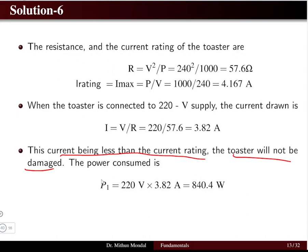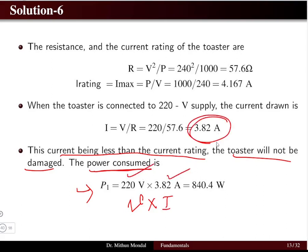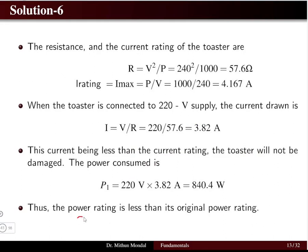The actual power consumed when connected to 220 V is P = 220 × 3.82 = 840.4 watts. This is less than the rated 1000 watts, confirming the toaster will not burn or be damaged since both current and power are below maximum ratings.